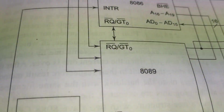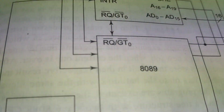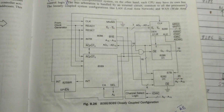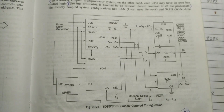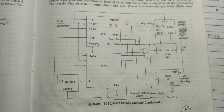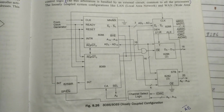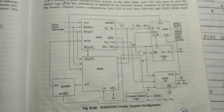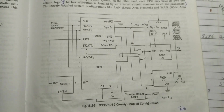Hey guys, today we are going to learn about tightly coupled, also known as closely coupled, and loosely coupled systems. This is the architecture of the 8086 closely coupled configuration. This closely coupled configuration is also known as tightly coupled configuration. I will tell you an easy way to learn this 8086 closely coupled configuration architecture.